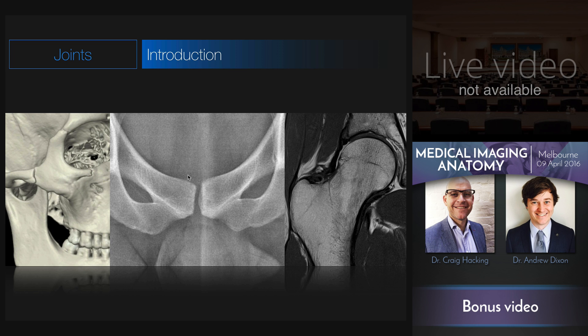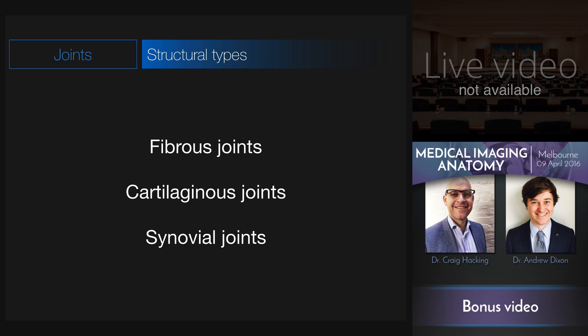The cartilaginous joints, such as the pubic symphysis, and the synovial joints, such as the hip joint. These three structural types of joint are defined by the tissue that binds the bones together. We're going to look at each of these in turn, beginning with the fibrous joints.